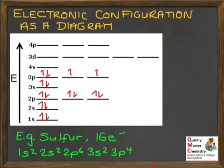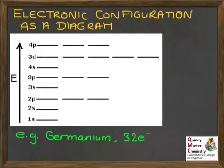Another example. Why don't you have a go at doing this one? Germanium, with 32 electrons, pause the video, see if you can sketch out what you think the electronic configuration would look like for germanium as a diagram.